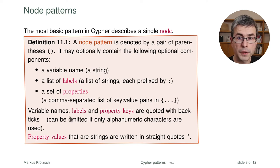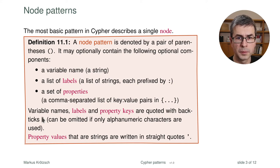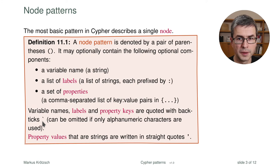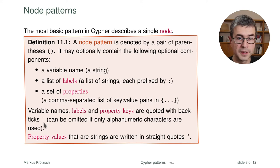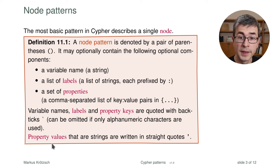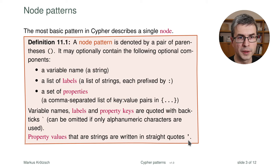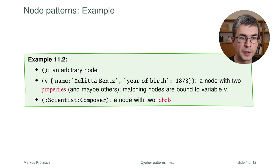Most of this takes the form of strings. The main quotation mechanism used by Cypher is backticks — special symbols not to be confused with straight quotes — used to quote names of variables, property keys, and so on. Values, on the other hand, are strings written in straight quotes. So you have two different quotation symbols: backticks for names and identifiers, straight quotes for string values.